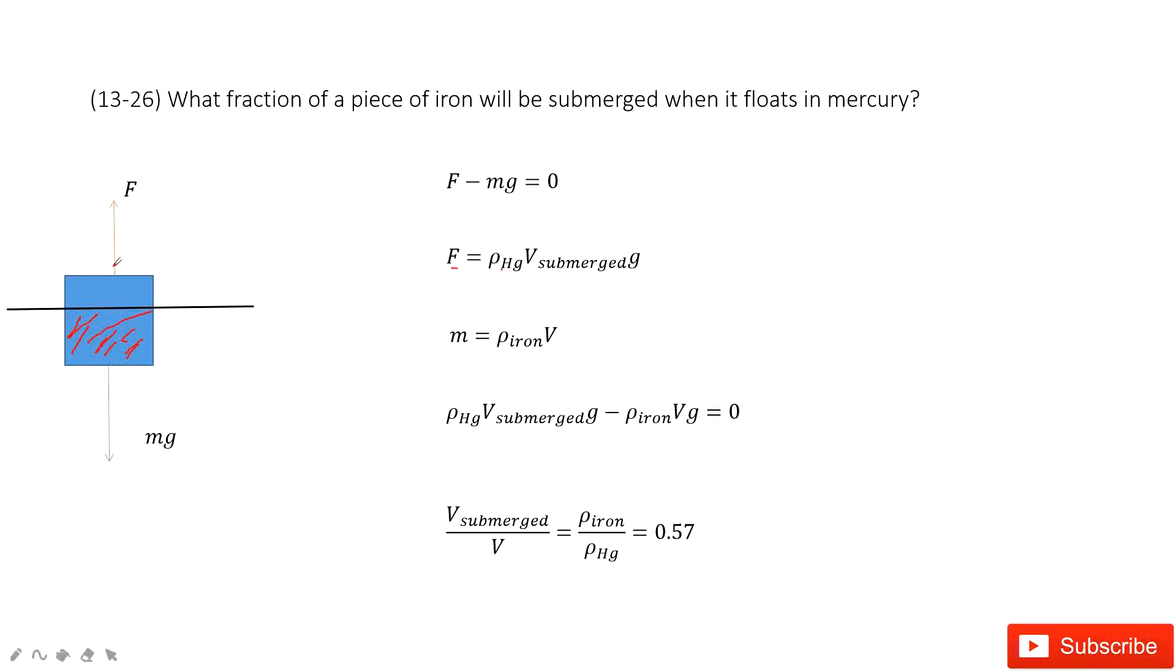Now can we find the gravity for this object? Sure. The gravity comes from the mass of this iron object. So m equals ρ_iron times V.